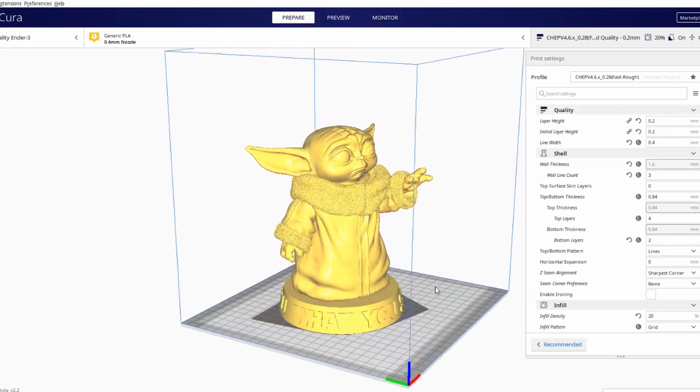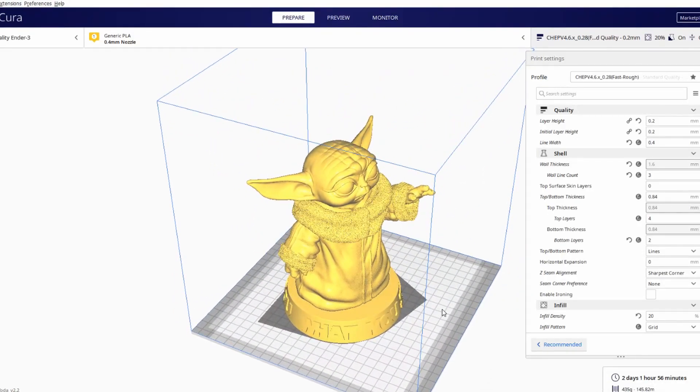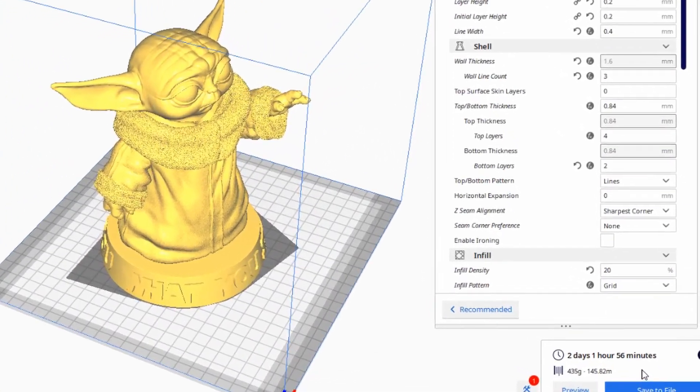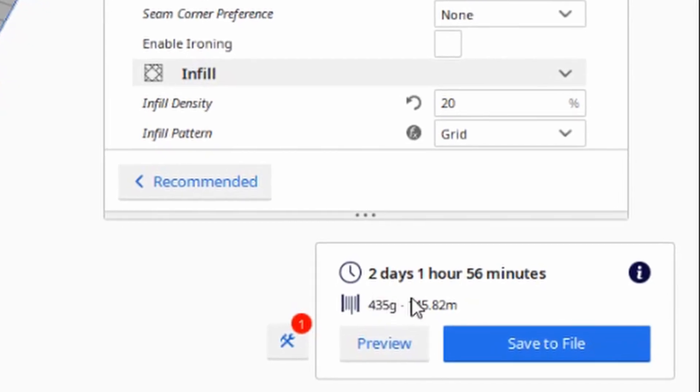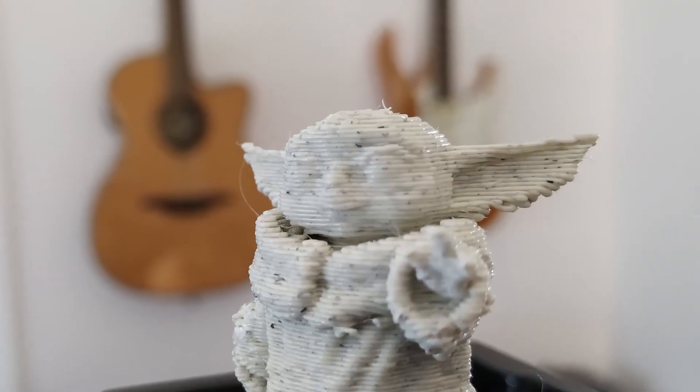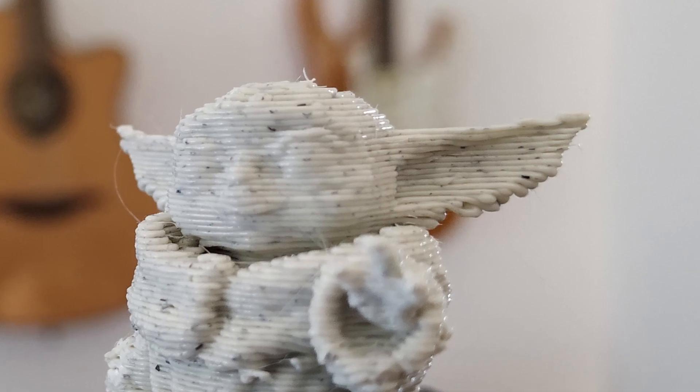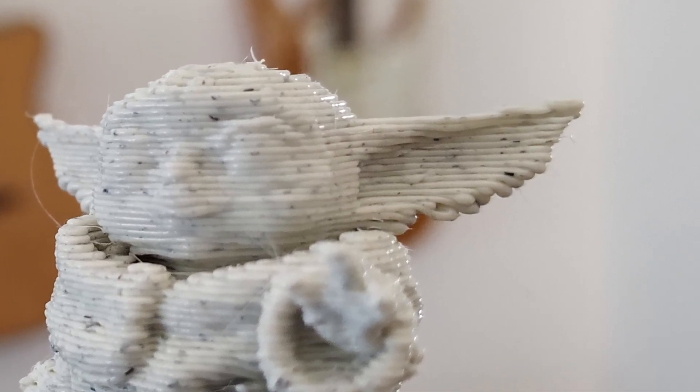Have you ever downloaded or made a 3D model, happily put it into your slicer, just to realize that it's going to take days for the print to finish? Or maybe you've done a print that you've been expecting greatness from, just to be put down by the fact that it looks like a sad turd?